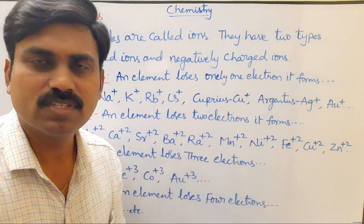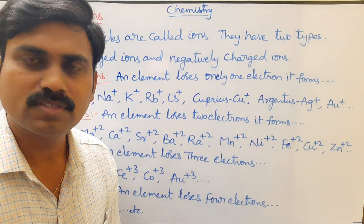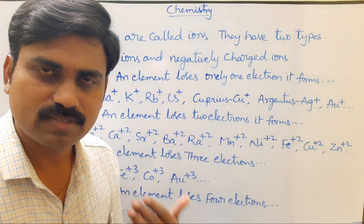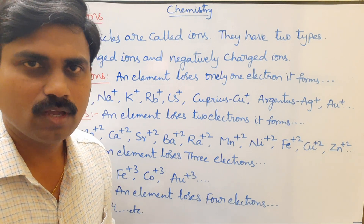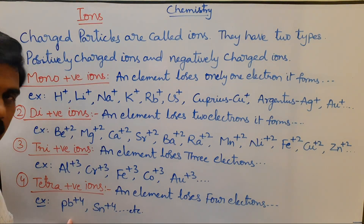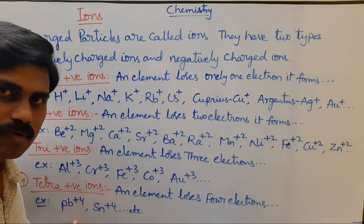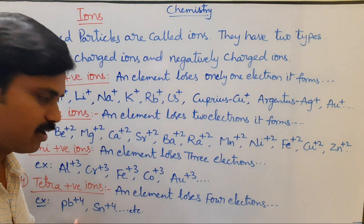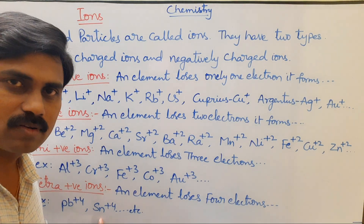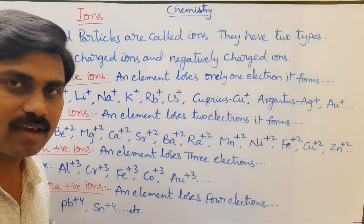When an element loses four electrons, it forms tetra-positively charged ions. Examples: Pb⁴⁺, the plumbic ion, and Sn⁴⁺, the stannic ion.